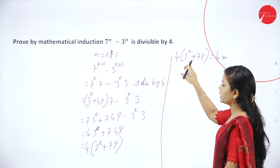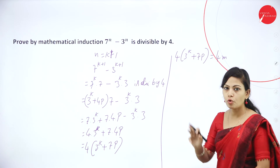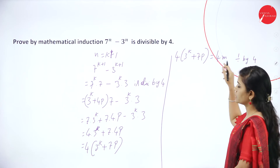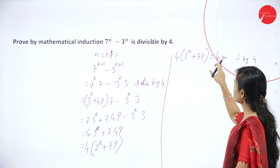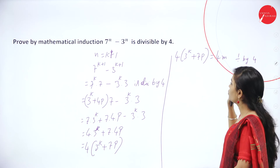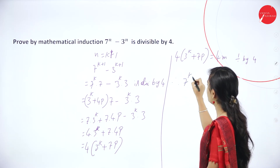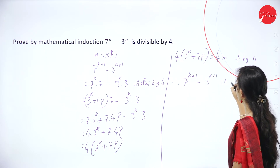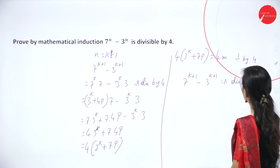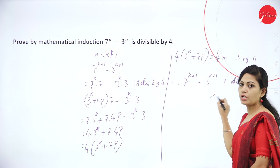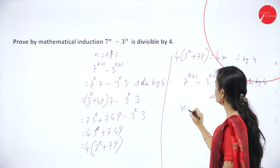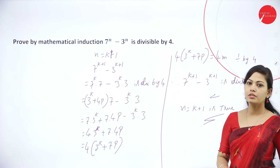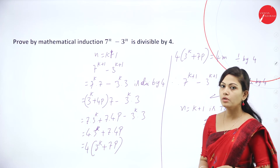Consider 4 into 3 power k plus 7p equal to 4m. So it is divisible by 4. Therefore 7 power k plus 1 minus 3 power k plus 1 is divisible by 4, and n equal to k plus 1 is true.